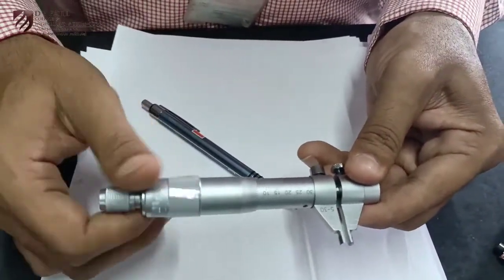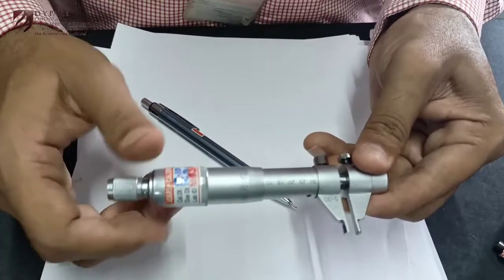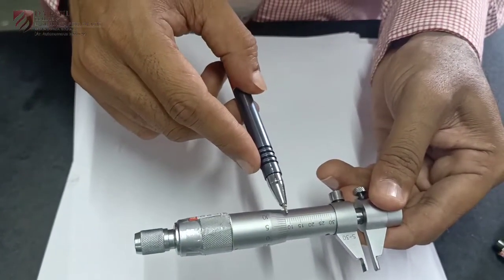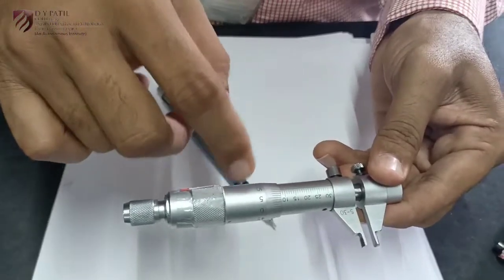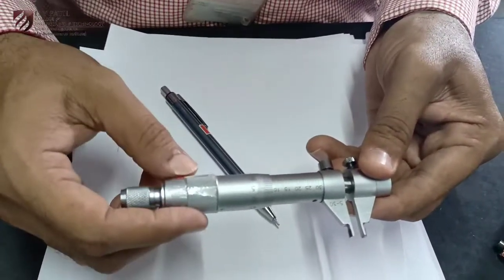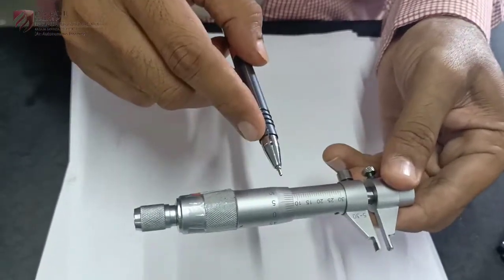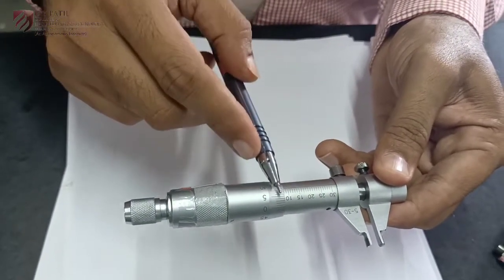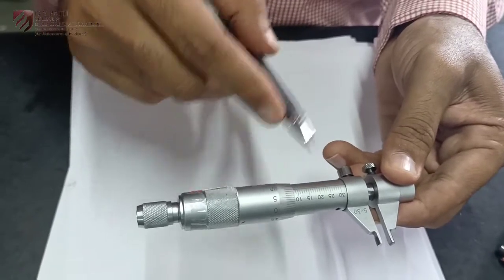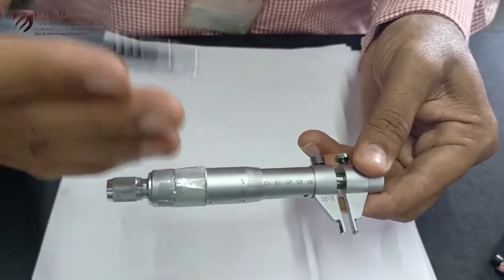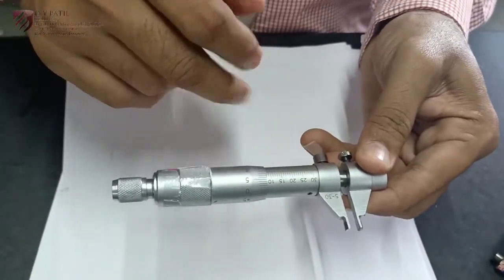So when you are reading also, you have to read it in opposite way to that of outside micrometer. Means outside micrometer visible is my reading. In case of inside micrometer, the division which is not visible will be my reading. In case of inside micrometer, the division which is matching or which is above the baseline is my reading.